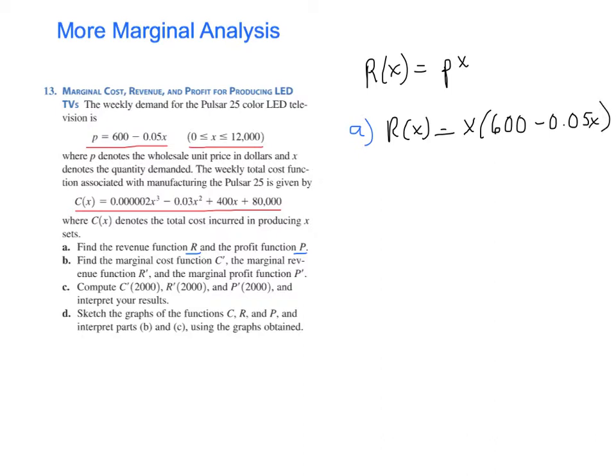R of X equals X times 600 minus 0.05X. And I'll just distribute that X and end up with 600 minus 0.05X squared.